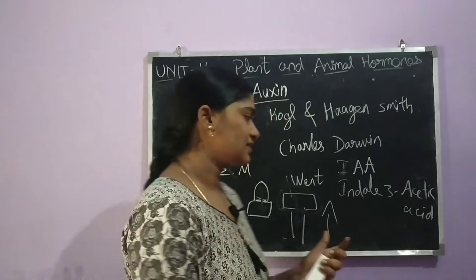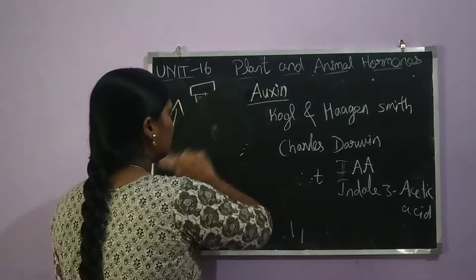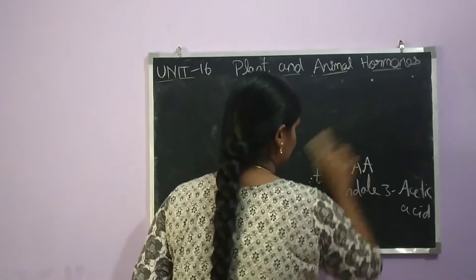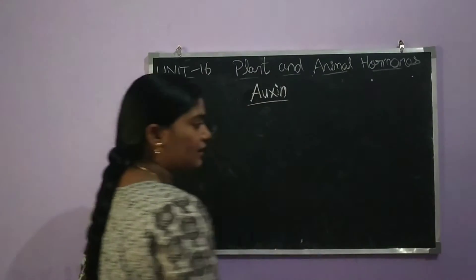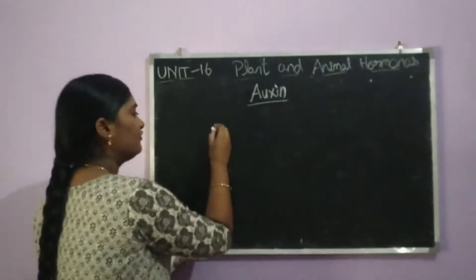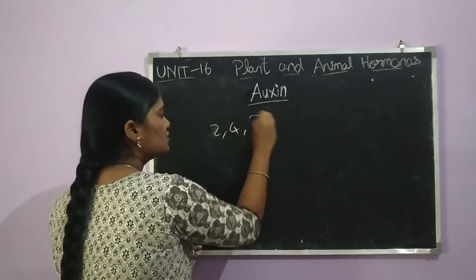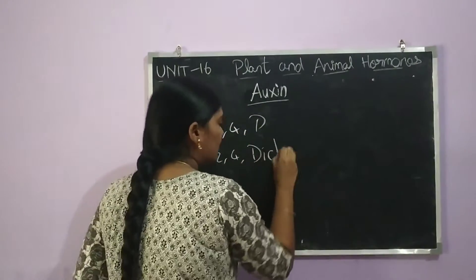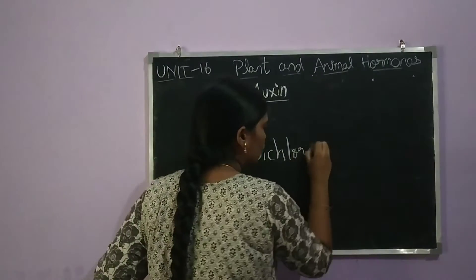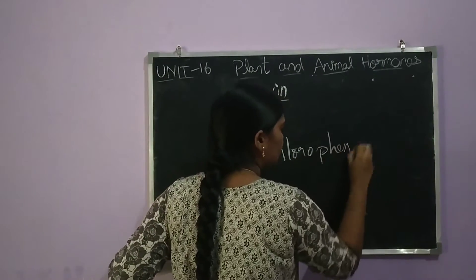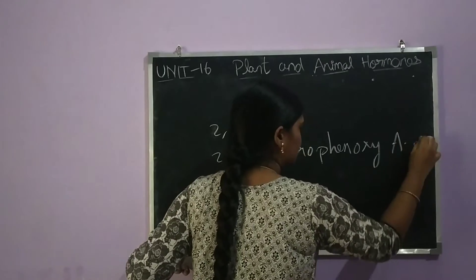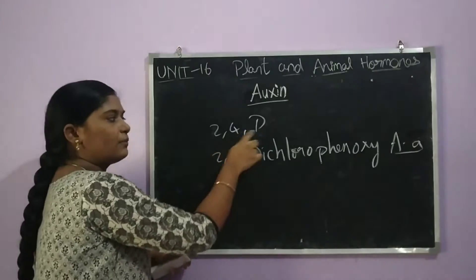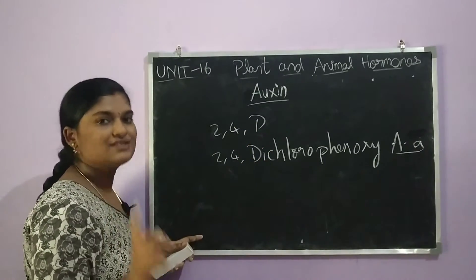Next is synthetic auxin. Synthetic auxin is produced artificially by humans. An example of synthetic auxin is 2,4-D, which stands for 2,4-Dichlorophenoxyacetic acid. This is an example for synthetic auxin.